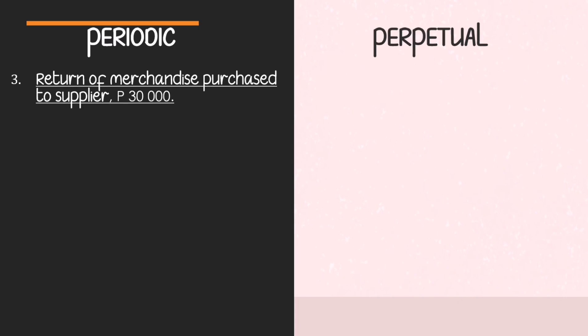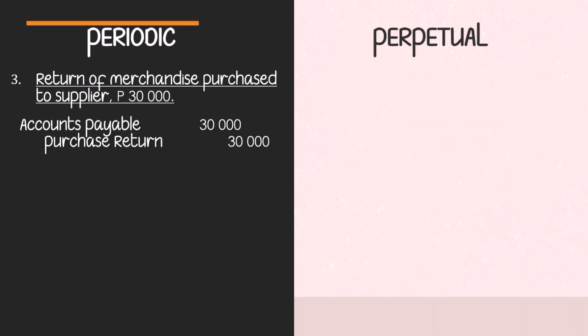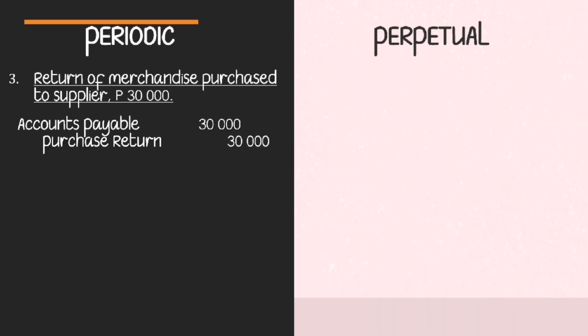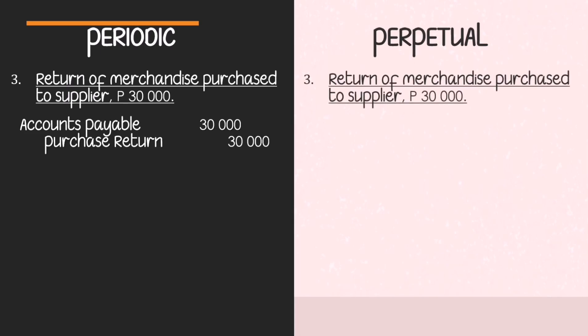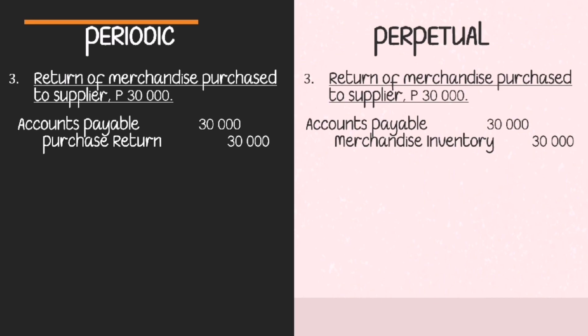Next transaction: return of merchandise purchased to the supplier amounting to 30,000. Under the periodic system, we debit Accounts Payable and credit Purchase Return, reducing the payable balance. Under the perpetual inventory system, we debit Accounts Payable to reduce the obligation, but the purchase return is recorded in the Merchandise Inventory account instead.